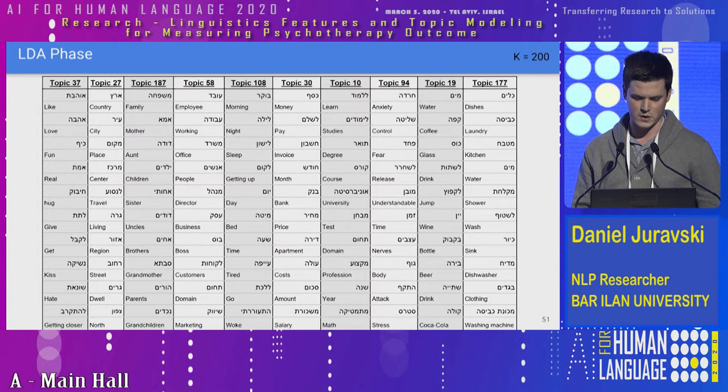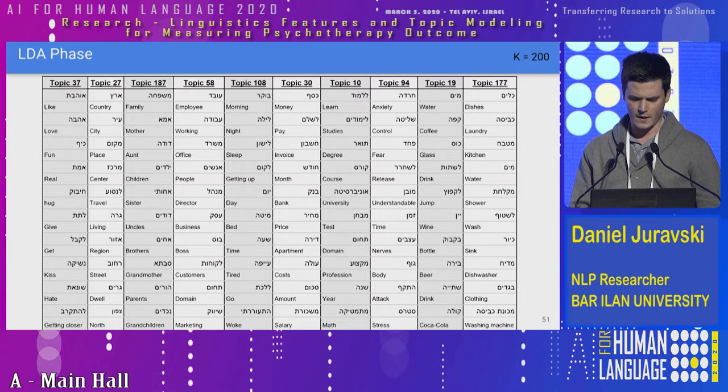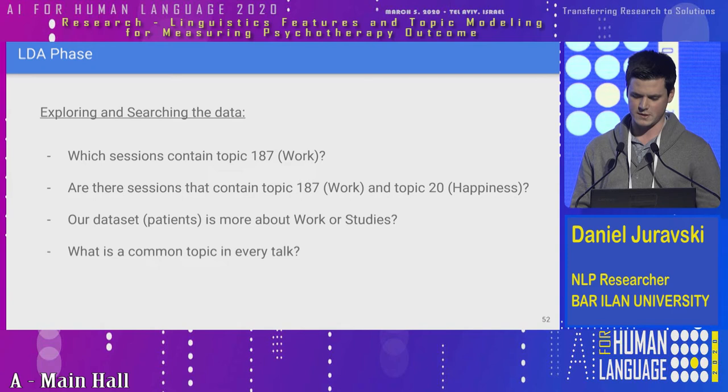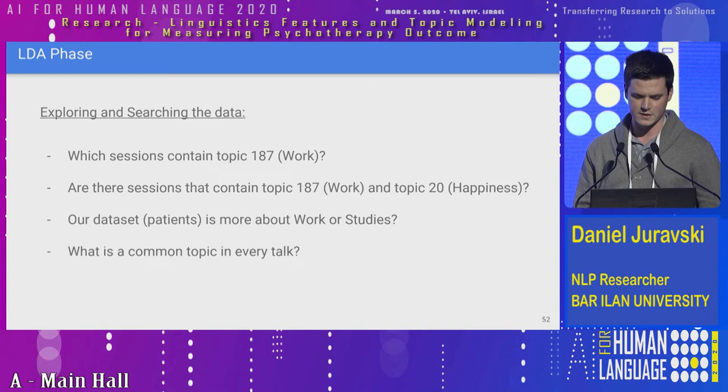At this point, we can see that the topics we extracted have reasonable semantic clustering. Even without any extra data or labels, we can explore interesting questions about our dataset. For example, which sessions contain topic 187 about family? Are there any sessions that contain both work topics and happiness topics? Is our dataset more about work or studies? All of that without any label data.